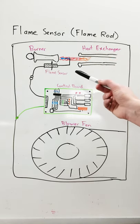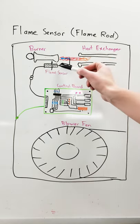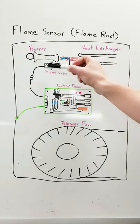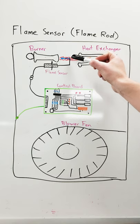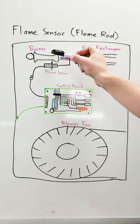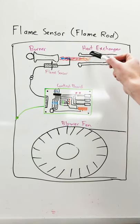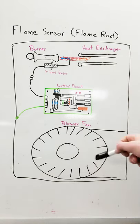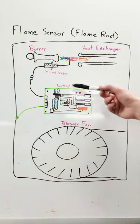So how this works is actually quite amazing. The flame sensor is just a piece of metal, a flame rod. Electricity will flow from the control board through the flame sensor, through ions in the flame, to either the burner or the heat exchanger, which are both grounded. This current is completed through ground.